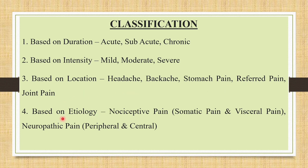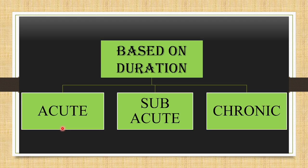Based on etiology, pain has been classified into nociceptive pain — that is somatic pain and visceral pain — and neuropathic pain, which includes peripheral and central types of pain.